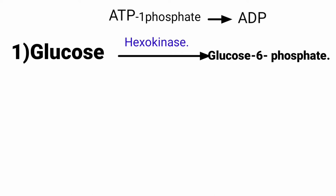Kinase is a group of enzymes that transfer phosphate groups. So overall in the first step: glucose molecule + ATP → glucose-6-phosphate, in the presence of the enzyme hexokinase.